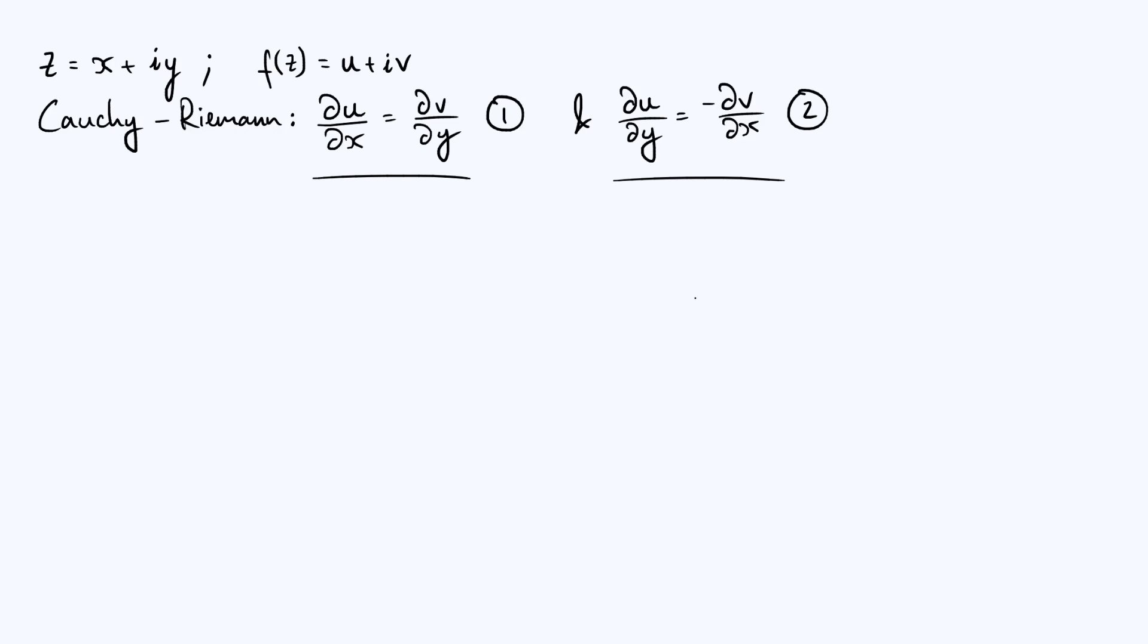Now the way to do that is take the first equation, we can differentiate it with respect to x, and you get ∂²u/∂x² is ∂²v/∂x∂y. And I'm going to call that equation 3. Now notice that we've got this mixed second partial derivative here, ∂²v/∂x∂y. We could get a similar mixed partial derivative from equation 2 by differentiating equation 2 with respect to y. Now to see how that works, let me just write out what we would get if we differentiate equation 2 with respect to y.